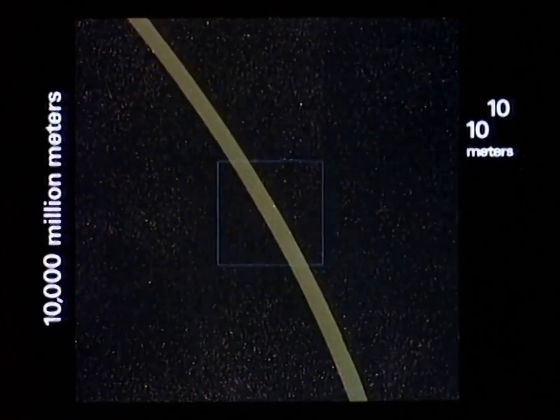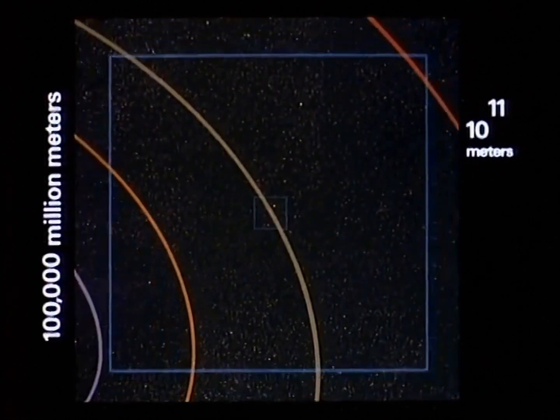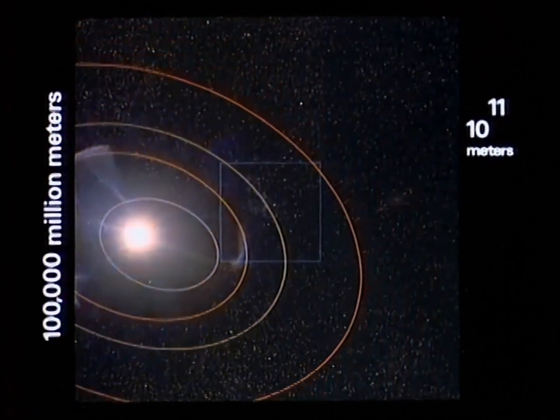Now we mark a small part of the path in which the Earth moves about the Sun. Now the orbital paths of the neighbor planets. Venus and Mars, then Mercury. Entering our field of view is the glowing center of our solar system, the Sun.